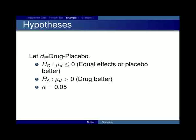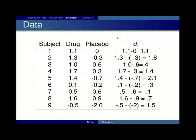So, in our example, we're trying to see the null hypothesis. mu_d is less than or equal to zero because the equal effects or the placebo is better. And H_a mu_d is greater than zero. Now, how do I know that? Because I've defined the difference to be drug minus placebo. One of the harder things in this test is figuring out what is your alternative hypothesis if it's one-sided.